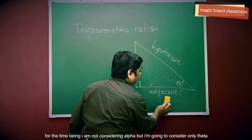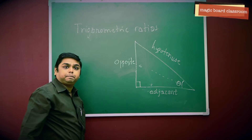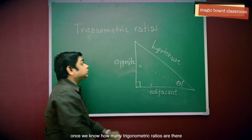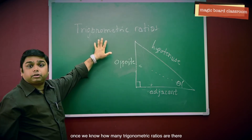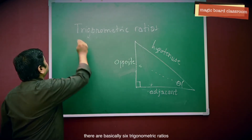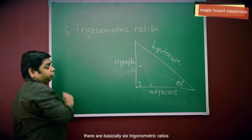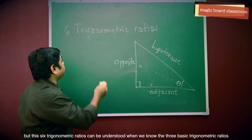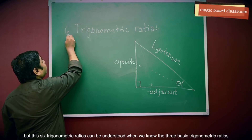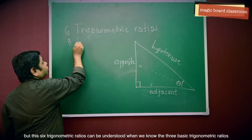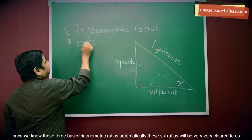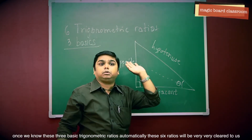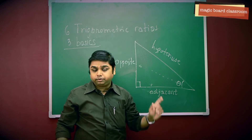I am going to consider only theta. Once we know how many trigonometric ratios there are — there are basically six trigonometric ratios. But these six trigonometric ratios can be understood when we know the three basic trigonometric ratios. Once we know these three basic trigonometric ratios, automatically these six ratios will be very clear to us.